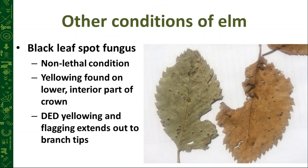Other conditions can be confused with Dutch elm disease when inspecting elms. One is black leaf spot fungus — a non-lethal condition common during moist years. You'll find it in the lower interior part of the crown, not extending out to a limb in the sunny part of the tree. If yellowing is confined to the lower shaded interior, it's probably just a foliar fungus not posing any major problem. You can also see the characteristic black spots on the yellowing leaves.